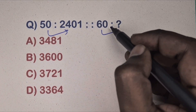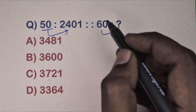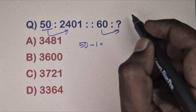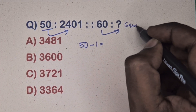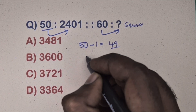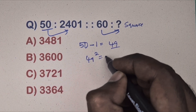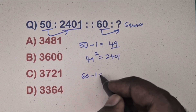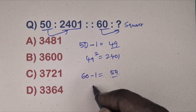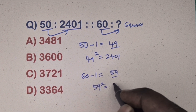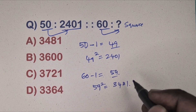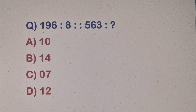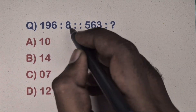Next question: 50 is related to 2401, and 60 is related to which number? This is a square relation. Take 50 — 50 minus 1 equals 49, and 49 squared equals 2401. Take 60 — 60 minus 1 equals 59, and 59 squared equals 3481. So option A is the correct answer.